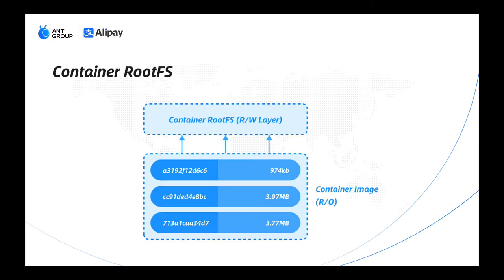Let's take a look at the container rootfs structure. It consists of a read-write layer and several read-only layers. A read-write layer keeps all the data the container modified or saved, while the read-only layers are the immutable part of the container image.